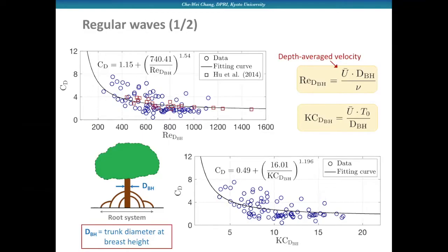Once we estimate all the coefficients, we use the traditional way to define the dimensionless flow parameters in the Reynolds number and Keulegan-Carpenter number by using the trunk diameter at breast height as the length scale. We are able to find out the relationships between the force coefficient CD with both Reynolds number and KC number. We can also plot the fitting curve, and we found that most estimations are within plus and minus 50% of the fitting empirical formula.